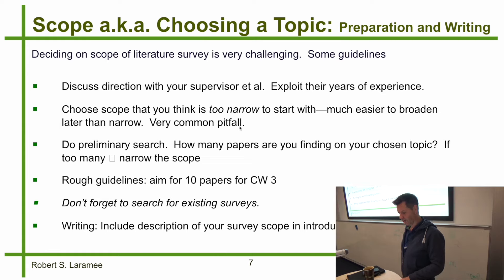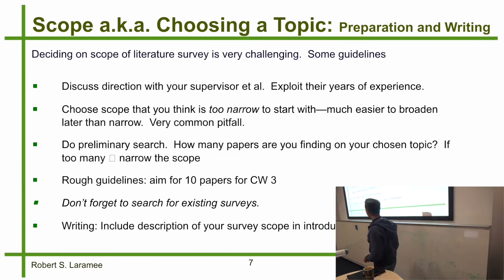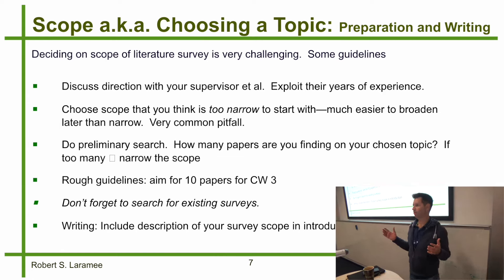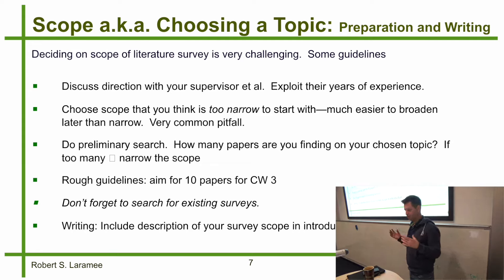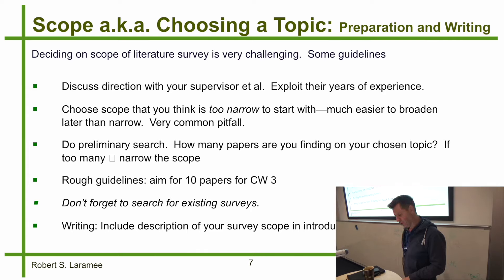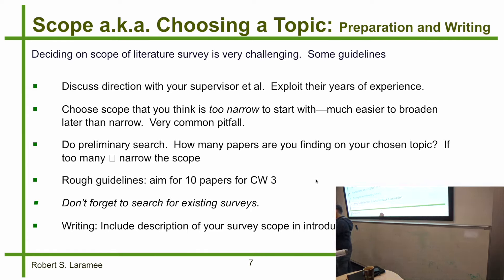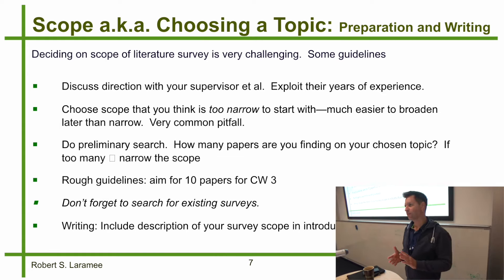Guideline three: do a preliminary search. How many papers are you finding on your chosen topic? If you find too many — something like hundreds of research papers — your scope is too broad. Aim for 10 papers. If you do a search and find 10 papers on your topic, that's perfect — almost ideal. If you want to find only 10 papers on your topic, it has to be very narrow.